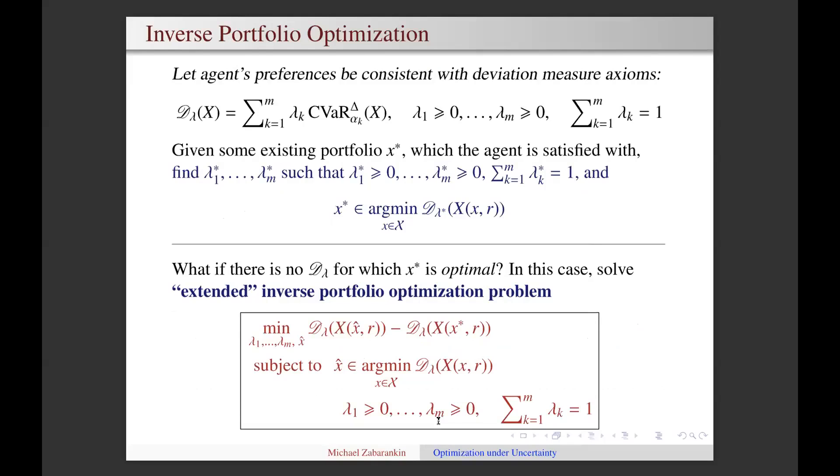The main assumption in answering this question is that investors' risk preferences are consistent with the axiomatic framework of general deviation measures. If this assumption holds, then in this case, investors' deviation measure can be represented in the form of mixed CVaR deviation with unknown lambdas. Suppose the investor knows a portfolio x star that he or she is relatively satisfied with. Then the inverse portfolio optimization problem is to find lambdas in the mixed CVaR deviation such that the original portfolio optimization problem with this mixed CVaR deviation yields the optimal portfolio x star.